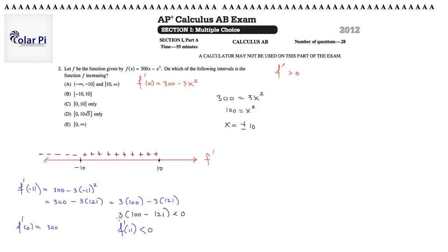Therefore, in fact, it should be the same value, that number. And therefore, we know that to the right of positive 10, we are negative. That is, f prime is negative.